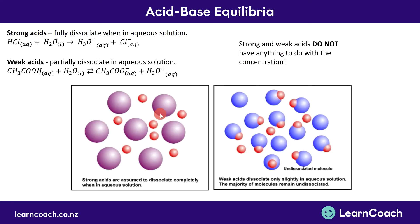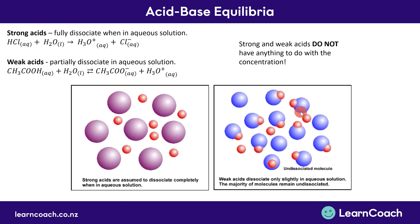Down here I have pictures of strong and weak acids. On the left-hand side we have a strong acid. Notice how they're all separated from one another because it has fully dissociated in water. If we look on the right-hand side, we see weak acids. What you'll notice here is that it has only partially dissociated. In many cases you'll see there is no dissociation, and so a lot of this acid has stayed as reactant.